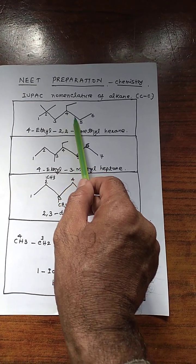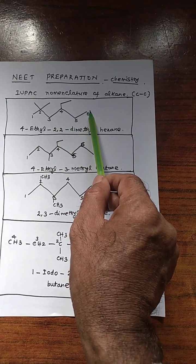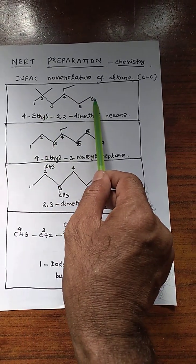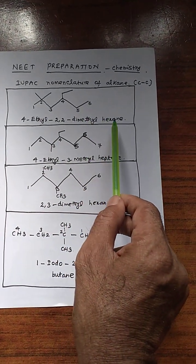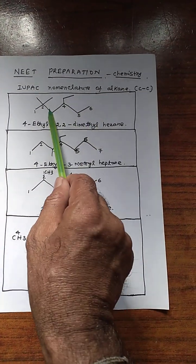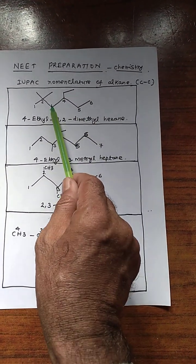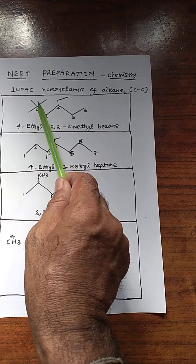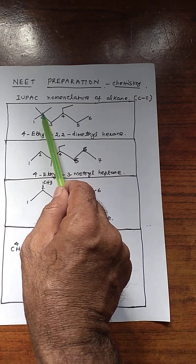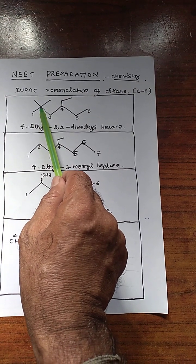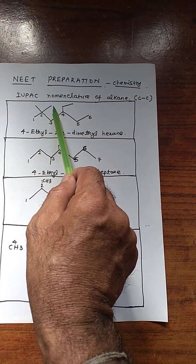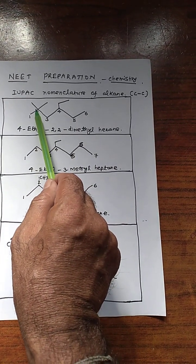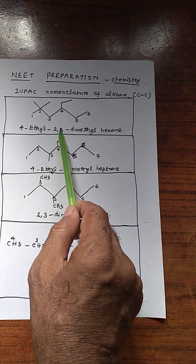The next one is position 5, and this one is the 6th carbon. If it is the 6th carbon connected, this is a single bond — so hexane. This methyl group is connected at the second carbon. So methyl, methyl — that is dimethyl. This is the second position, so 2,2-dimethyl.